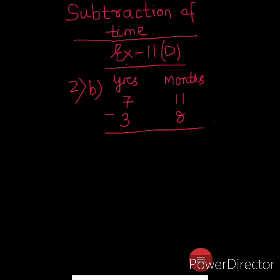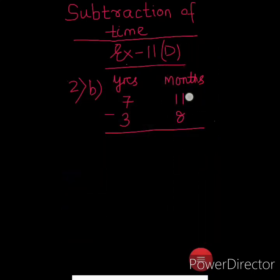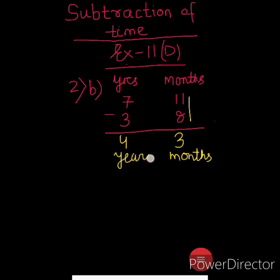Now let's get started with question number 2. Here we are going to solve about years and months. We are going to subtract 7 years 11 months minus 3 years 8 months. In months: 11 minus 8 is possible, so 11 minus 8 is 3 months. Next, 7 minus 3 is 4 years. So we got the answer as 4 years and 3 months.